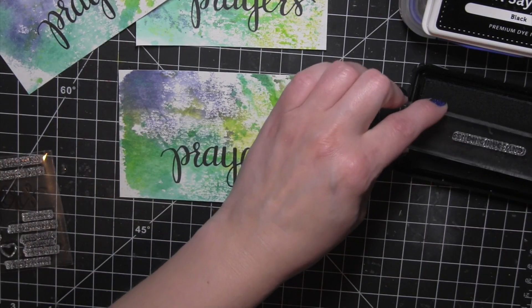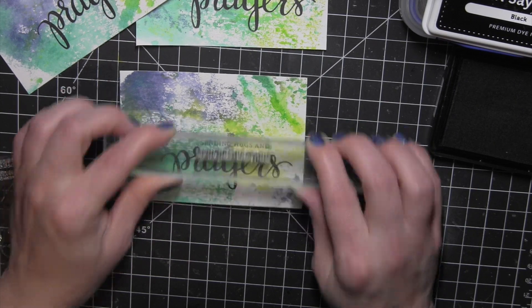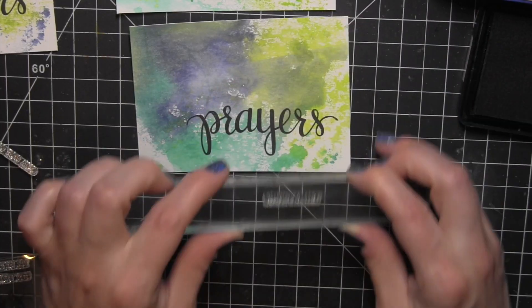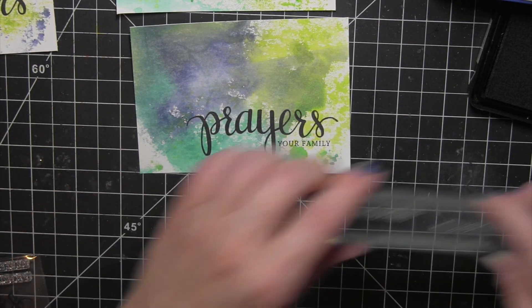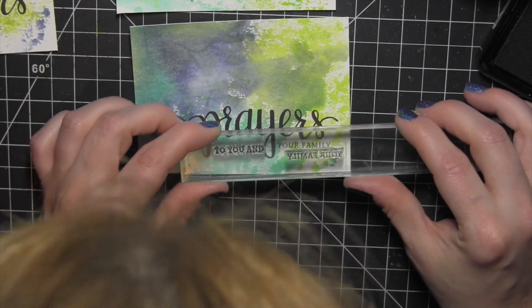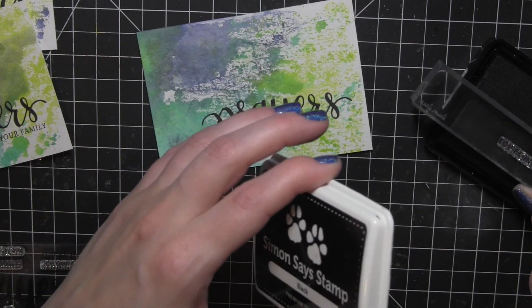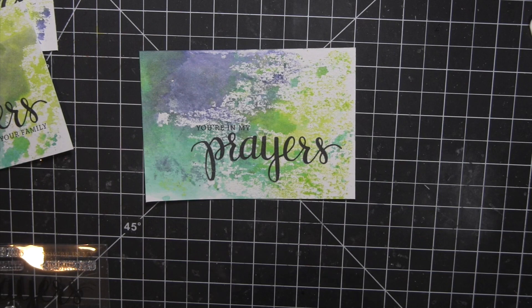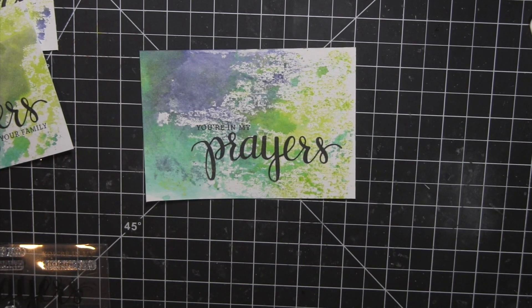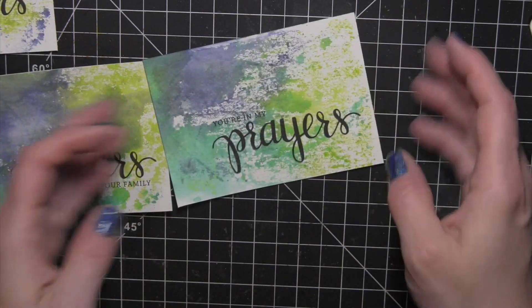And then I will grab some of those coordinating phrases and I'm going to just stamp a different one on each card. This first one is Sending Hugs and Prayers. The next one is going to be Prayers. And then this had two phrases that I love that it'll go around that Y. So Prayers to you and your family. And finally, I'm going to have you're in my prayers.